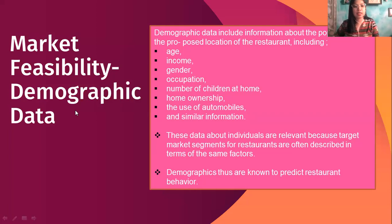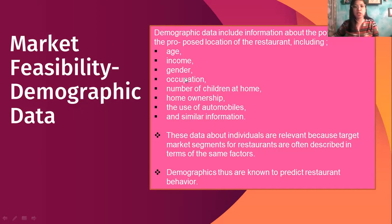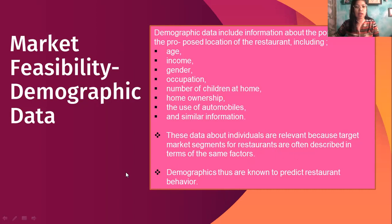For accessibility and demographic data, you have already done this in your online survey questionnaire. Consider putting the age, income, gender, occupation, number of children at home, homeownership, use of automobiles, and other similar information. This data about individuals is relevant because segments of restaurants are often described in terms of the same factors.